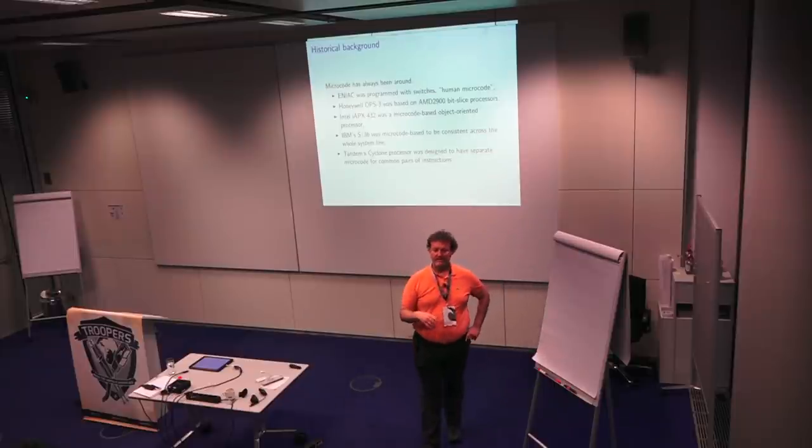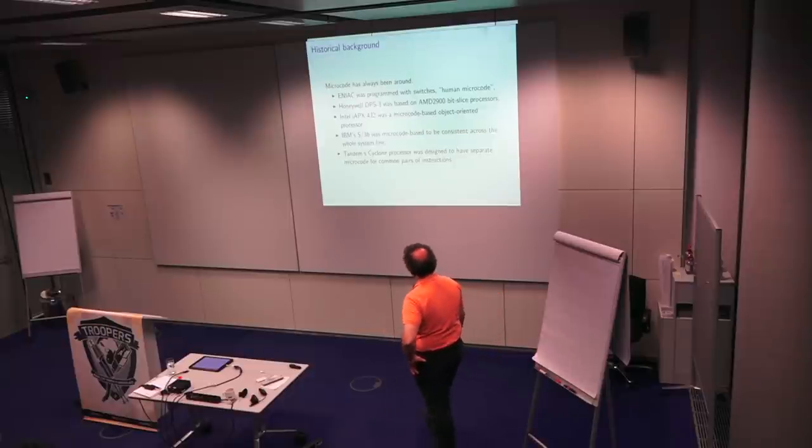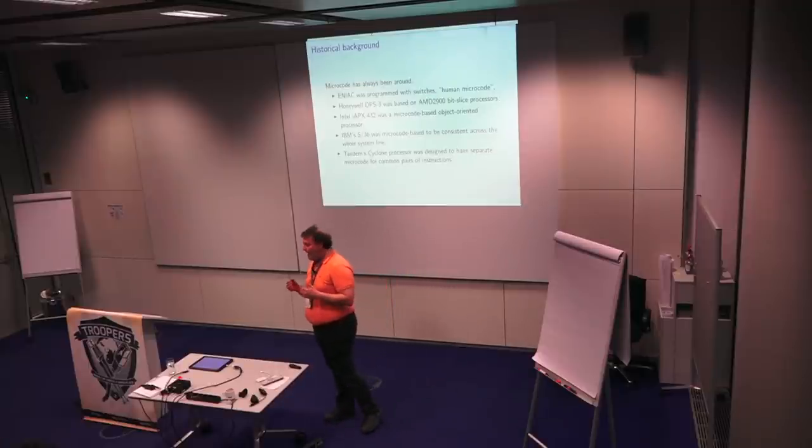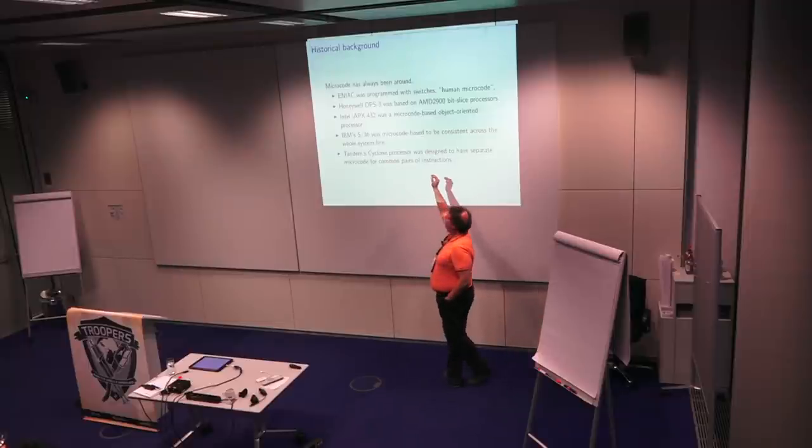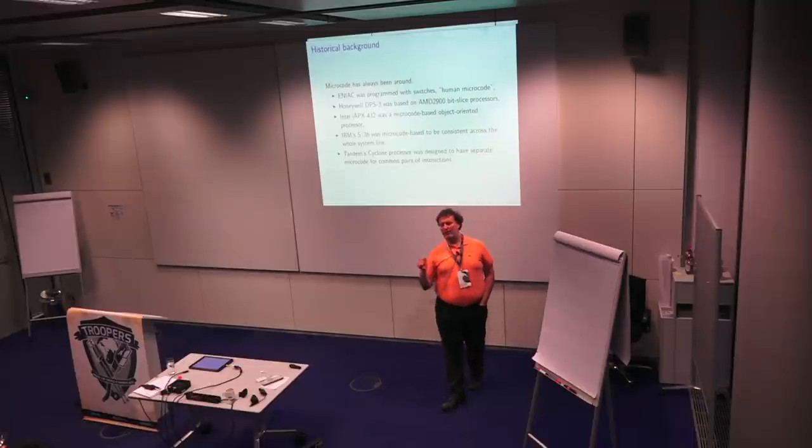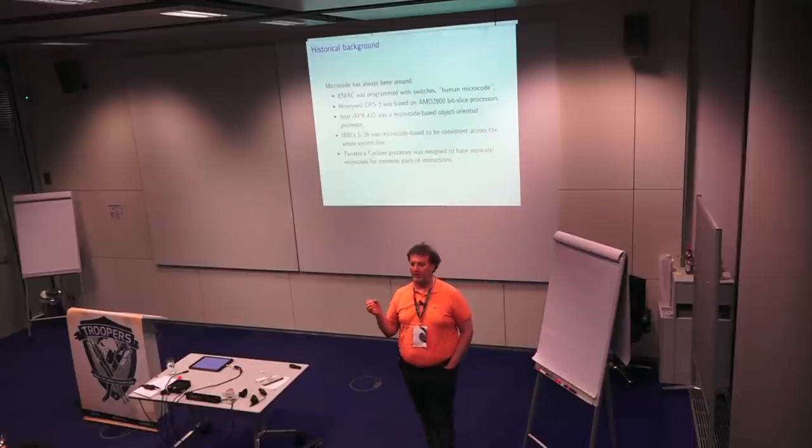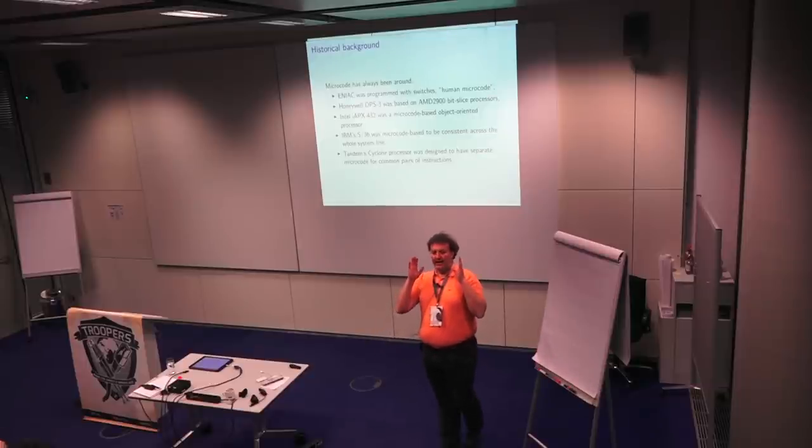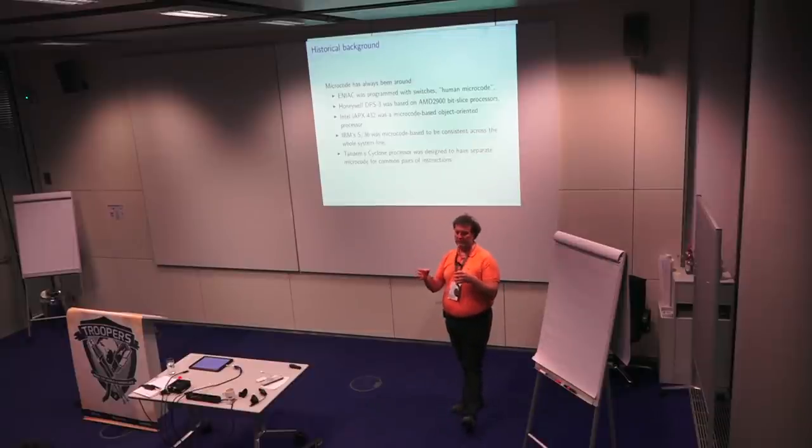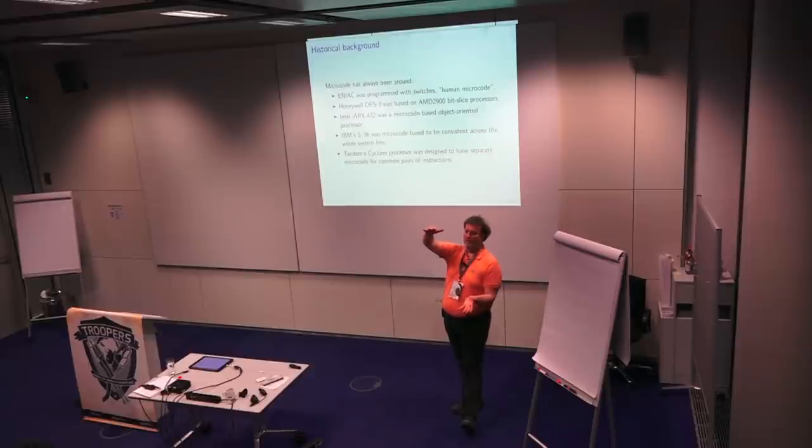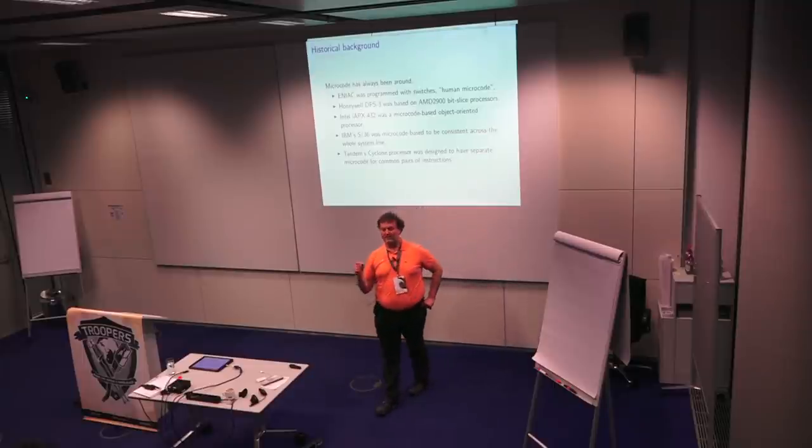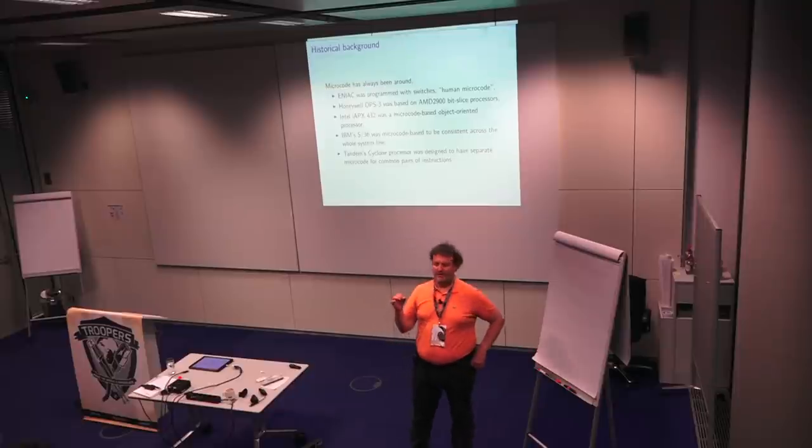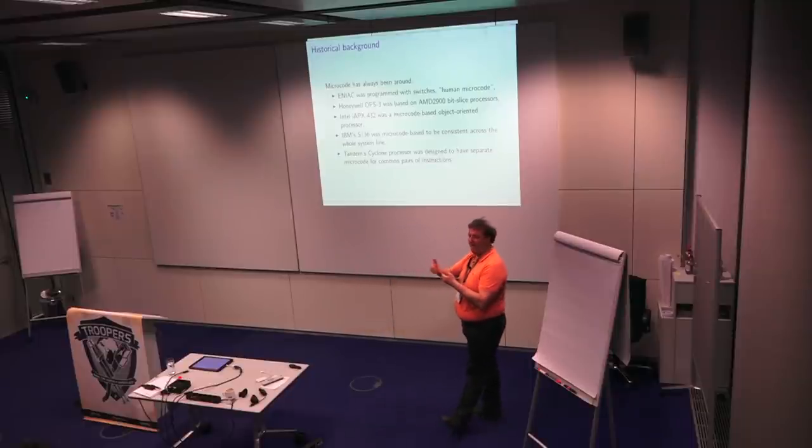The Tandem is a mainframe class system designed to survive the most incredible disasters. And the Tandem Cyclone processor was a processor designed with several specific characteristics in mind. One of them was performance. And a key performance was for the superscalar design to be extremely fast even when running in lockstep. Now, the thing about Tandem is that all the processors operate in lockstep. So you have two processors and basically each instruction is executed at the same time by two processors. And if the two processors don't agree, then the whole processing unit is disabled and marked as bad.